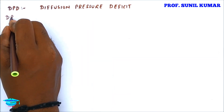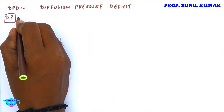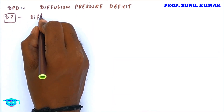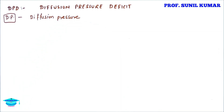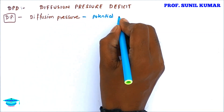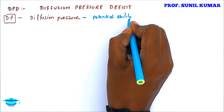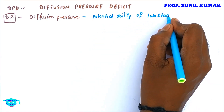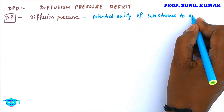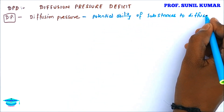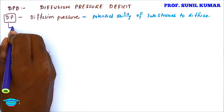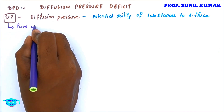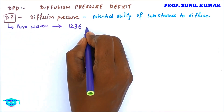When you talk about DPD, first we need to understand what is DP — it is Diffusion Pressure. The definition we all know: it is the potential ability of a substance to diffuse, meaning under what pressure that substance can diffuse is called DP.